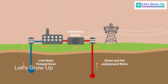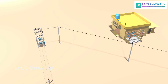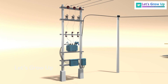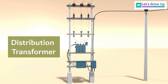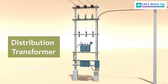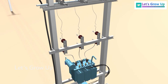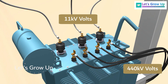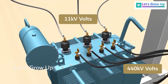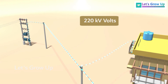However, this electricity is typically produced at high voltages, which are not suitable for direct use in our homes or offices. To make this electricity usable for consumers, step-down or distribution transformers are employed. These transformers play a crucial role in reducing the voltage from the high levels generated to lower voltages that are safe and practical for everyday use.